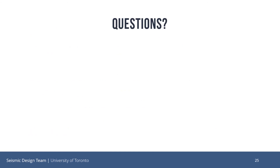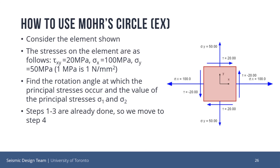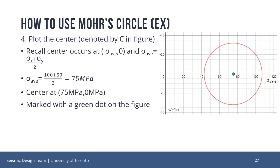Does anyone have any questions on the steps on how we use Mohr's Circle to find different values at different rotation angles? Consider the element shown. The stresses on the element are as follows: tau xy equals 20 MPa, sigma x equals 100 MPa, and sigma y equals 50 MPa. We must find the rotation angle at which the principal stresses occur, and the value of the principal stresses sigma 1 and sigma 2. Steps 1 to 3 are already done as we have defined them previously, so we may move on to step 4. The center of the circle may be plotted by recalling the formula for sigma average. As the center occurs at the point (sigma average, 0), we get a sigma average of 75 MPa, and the center is shown as the green dot on the figure.